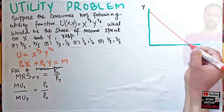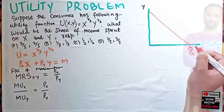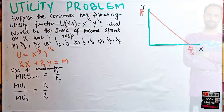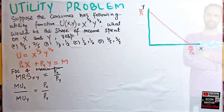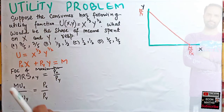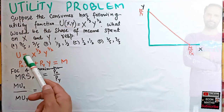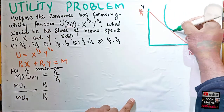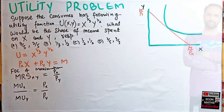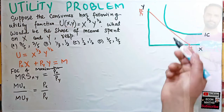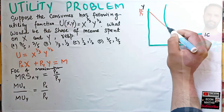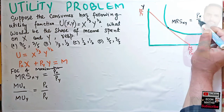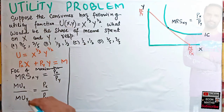On the diagram, good x is on one axis and good y on the other. The budget constraint intercept is M / P_x. At the optimal point, the indifference curve must be tangent to the budget constraint. This tangency condition means the marginal rate of substitution between good x and good y equals P_x / P_y at the optimal point.